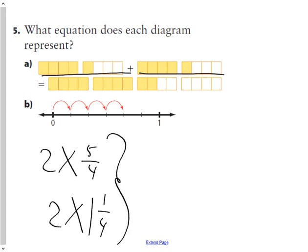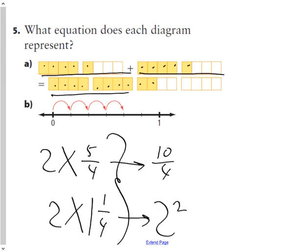Either way you look at it, it's the exact same question. How many quarters do I have? I count one, two, three... up to ten quarters. As a mixed fraction, I'd have two and two-quarters, which is the same as two and a half, because two-quarters simplifies to one-half.